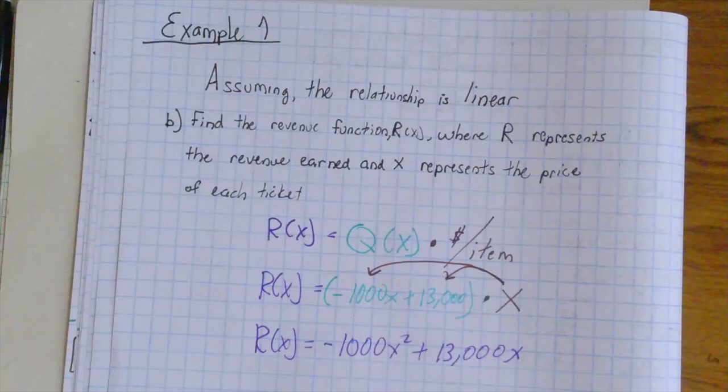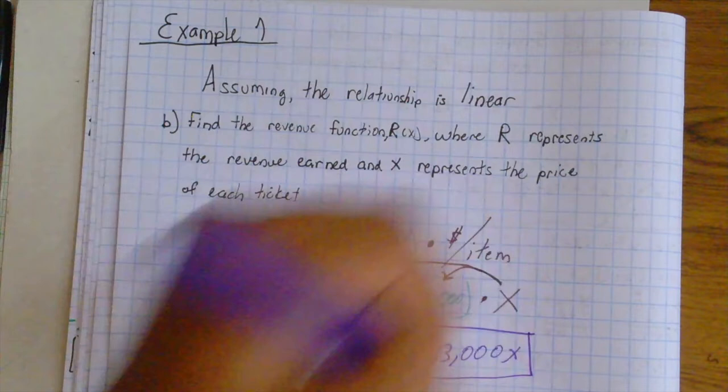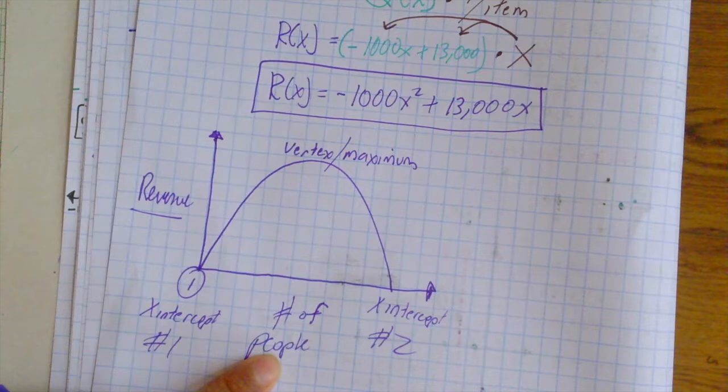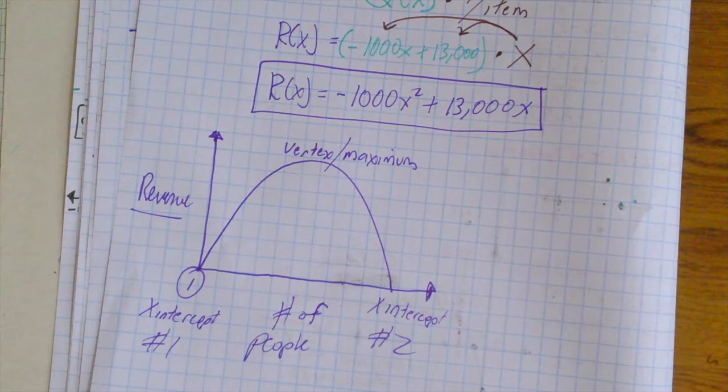This is our quadratic equation for a revenue function. Now, with every quadratic function, we can create a graph. This parabola is described by the revenue, by the number of people, in which we can identify two x-intercepts and a vertex of maximum, meaning that there is a max price that can be charged before the revenue starts to decrease.